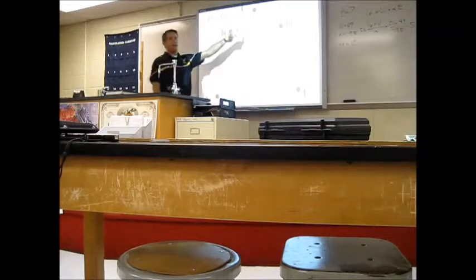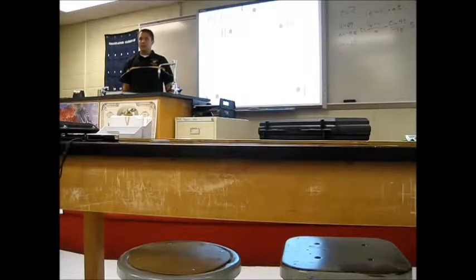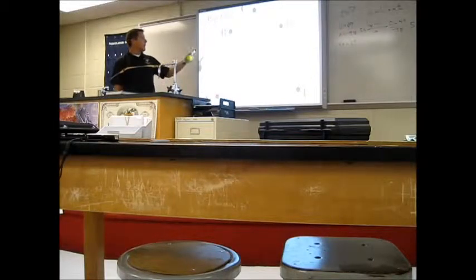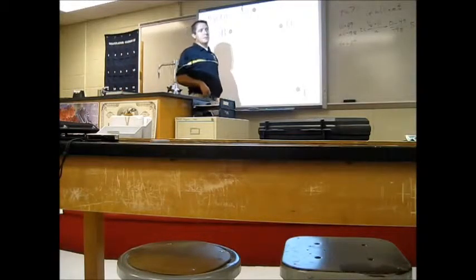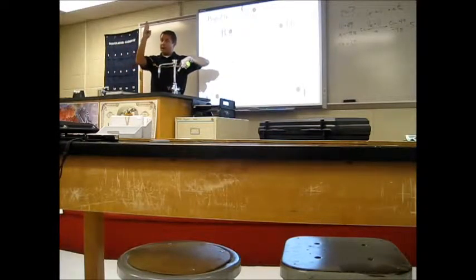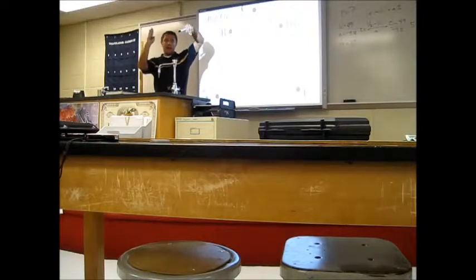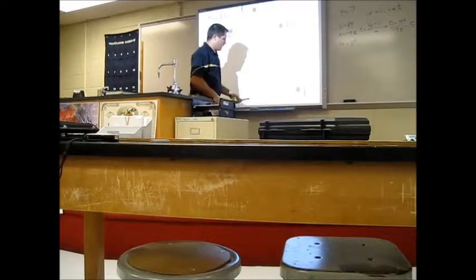So if the initial velocity is 49 m/s upward at point A, at point E the velocity will be −49 m/s. At point D, if it's the same height as point B — where we said the velocity was 39.2 m/s — then the velocity at D will be −39.2 m/s. At any matching height, the velocity is the same magnitude but negative. Everything is perfectly symmetrical.